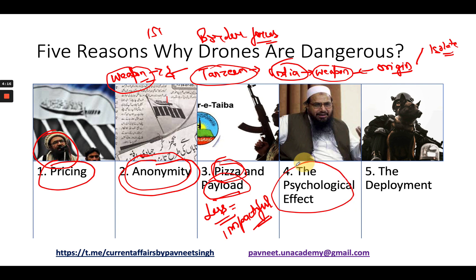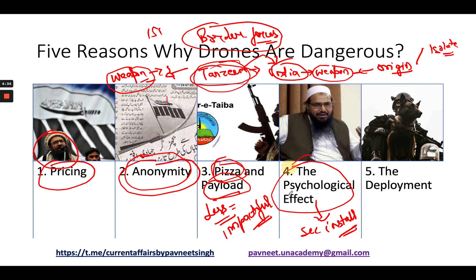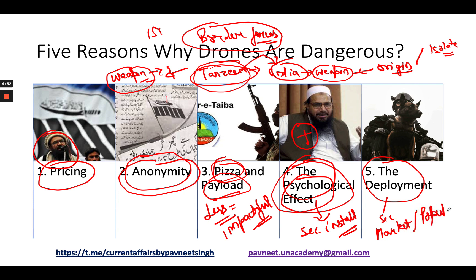The fourth factor is the psychological effect. When you use a drone to target a security installation, you create a lot of psychological distress among the security forces — they are already fighting border threats and illegal infiltration by tanzeems, and drone attacks add another layer of psychological stress. The fifth factor is deployment flexibility. Today you can deploy a drone not only against a security installation but also to target a market area, a populated area, or an area with a large civilian population, thereby causing more damage. Deployment is relatively easy in the case of drones.